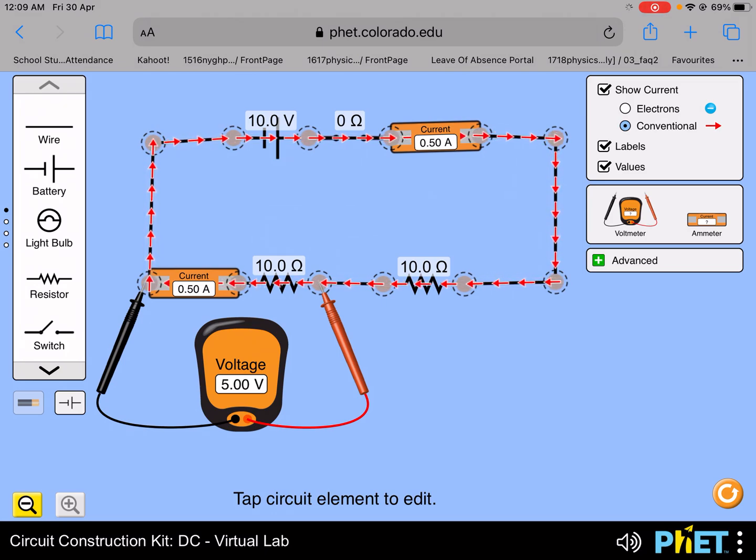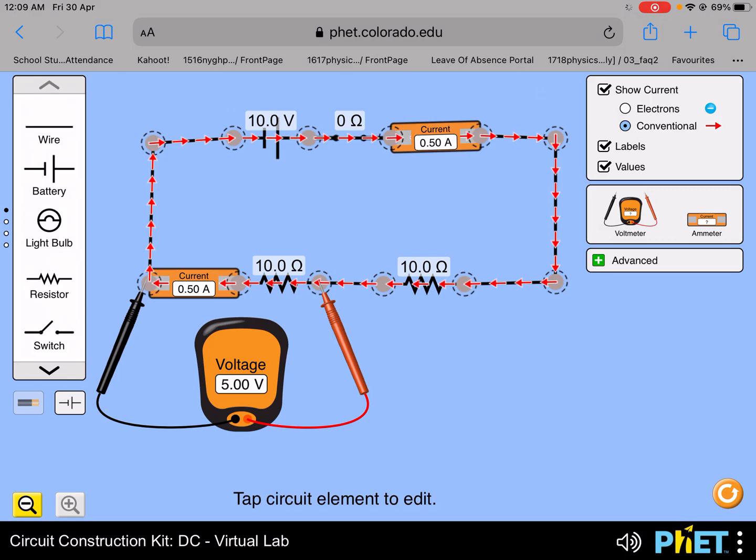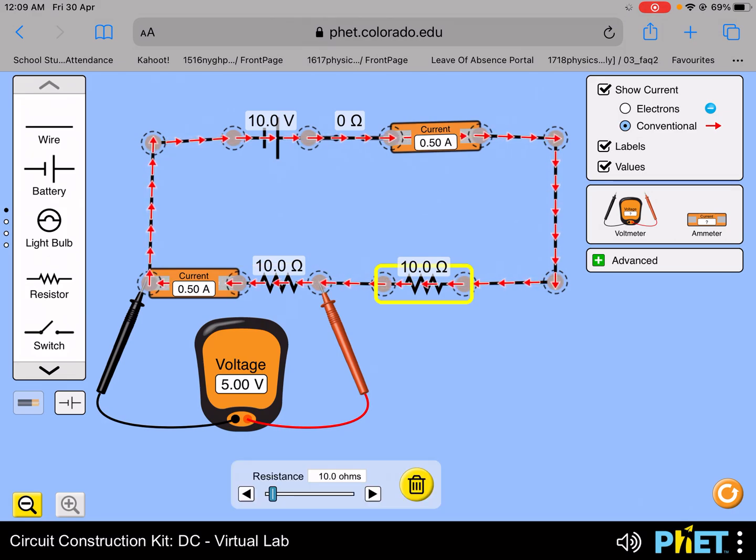Currently it's 5 volts because it's half of the EMF. With two identical resistances, they have equal potential difference, so 10 volts divided by 2 is 5 volts.